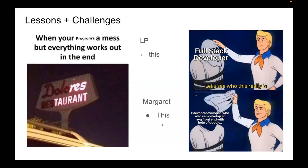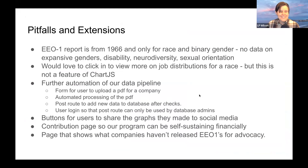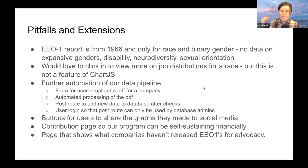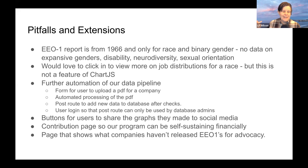We have some pitfalls and extensions to mention. The EEO1 report form is from 1966 — it only has certain categories for race and only binary genders, with no data on expansive genders, disability, neurodiversity, or sexual orientation. There are also some limitations of Chart.js, the library Margaret learned from scratch for our graphs. Going forward, we'd love further automation of our data pipeline — integrating the PDF-to-Excel step directly into the program — and we'd love users to be able to submit PDFs they find themselves.